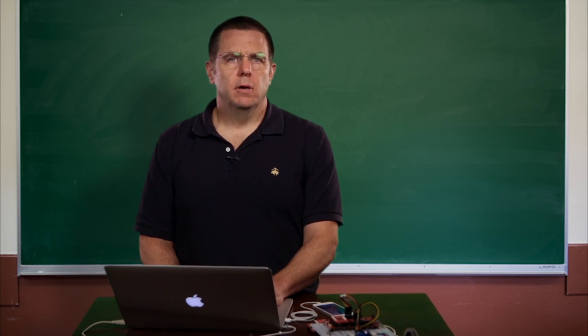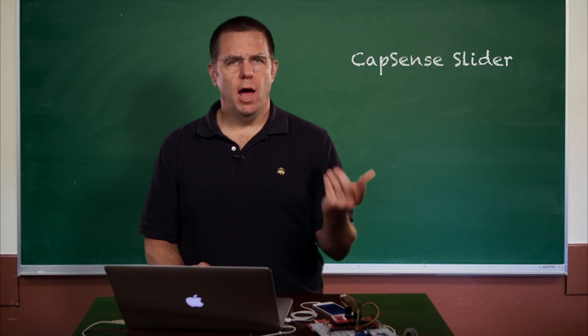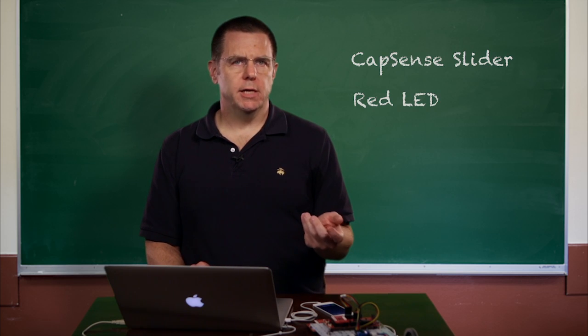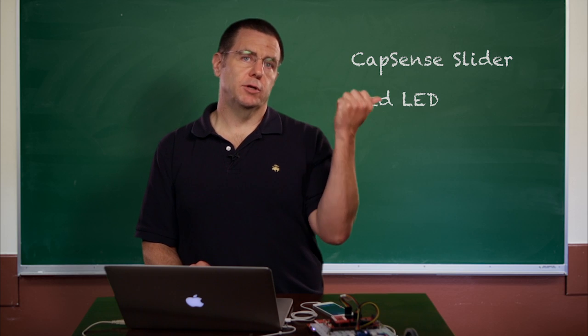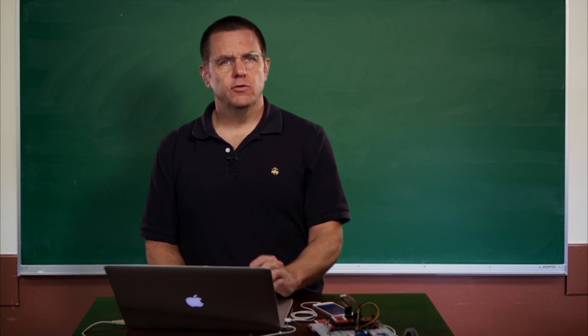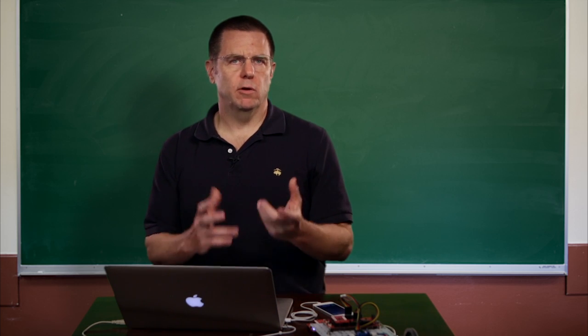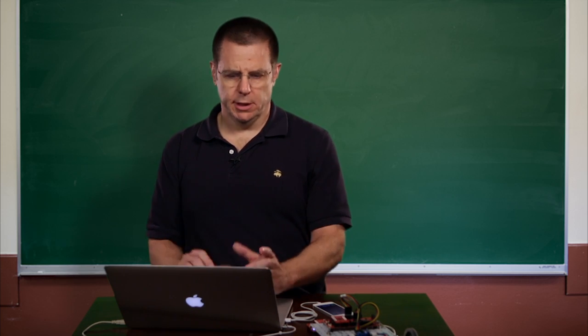Welcome back. At this point, we've completely configured our schematic. The schematic will define all of the firmware that will run inside of our project. There will be two things going on: a CapSense slider and a red LED. The CapSense slider will be able to talk to the app, and you'll be able to turn the red LED on and off. So now we need to configure the BLE component so that it's got those two characteristics in it.